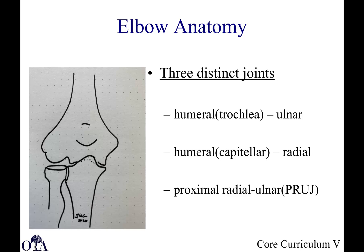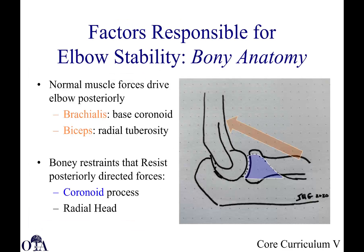When you think about the elbow, there are three distinct joints: the ulnar humeral joint, the radial capitellar joint, and the proximal radial ulnar joint. So you have three bones and three joints. When thinking about elbow stability, you first have to think about bony anatomy. Normal muscle forces drive the elbow posteriorly, and there are bony restraints that resist this. The coronoid process helps to resist posterior dislocation, as does the radial head.